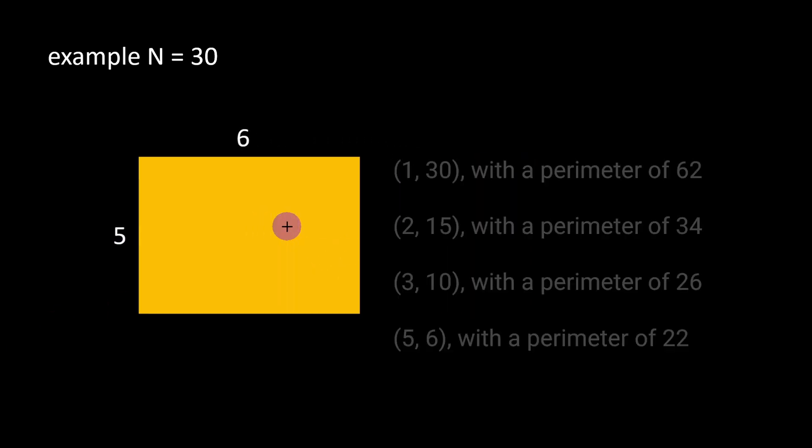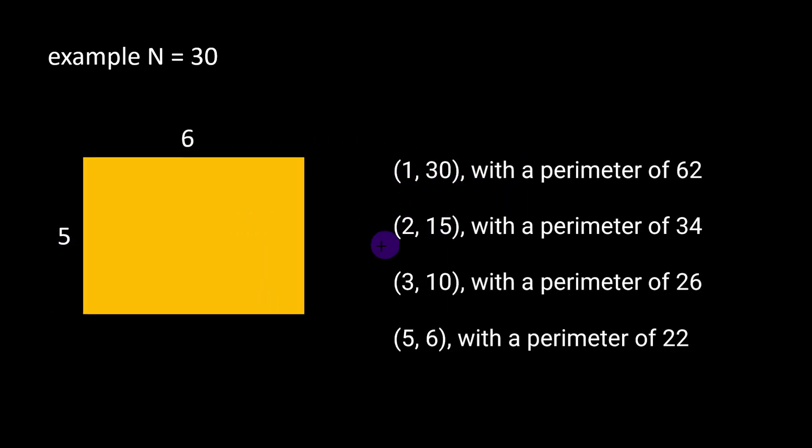Considering the values we have seen: 1, 30 with a perimeter of 62; 2, 15 with a perimeter of 34; 3, 10 with a perimeter of 26; and 5, 6 with a perimeter of 22, we must return 22 which is the minimal value of the perimeter in this example.